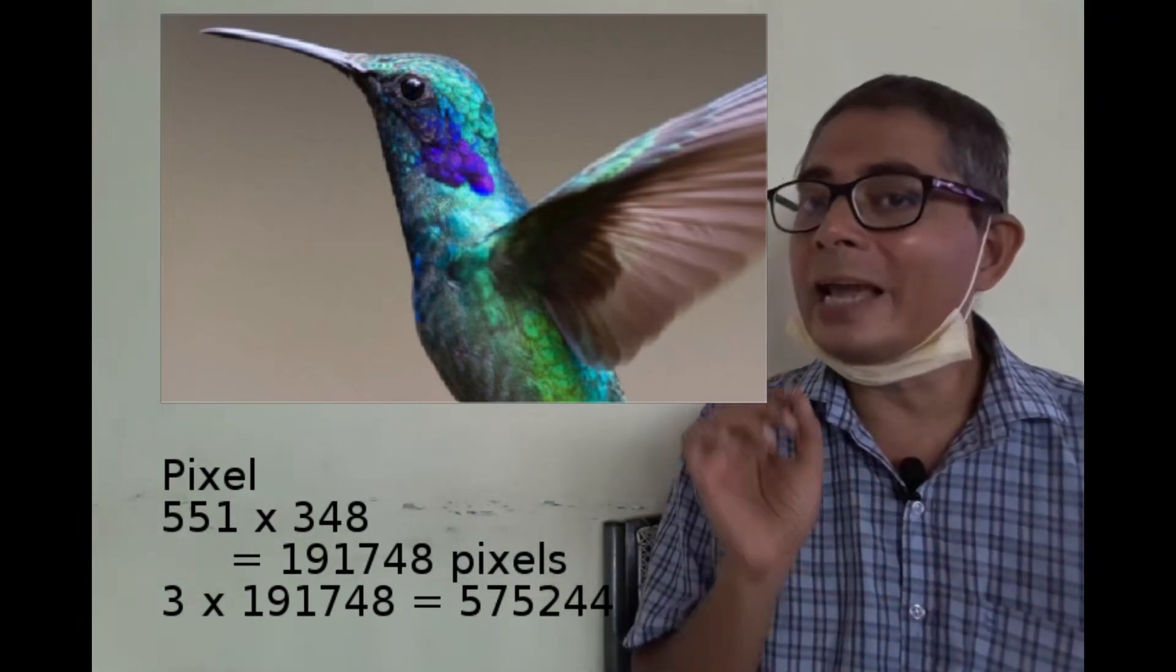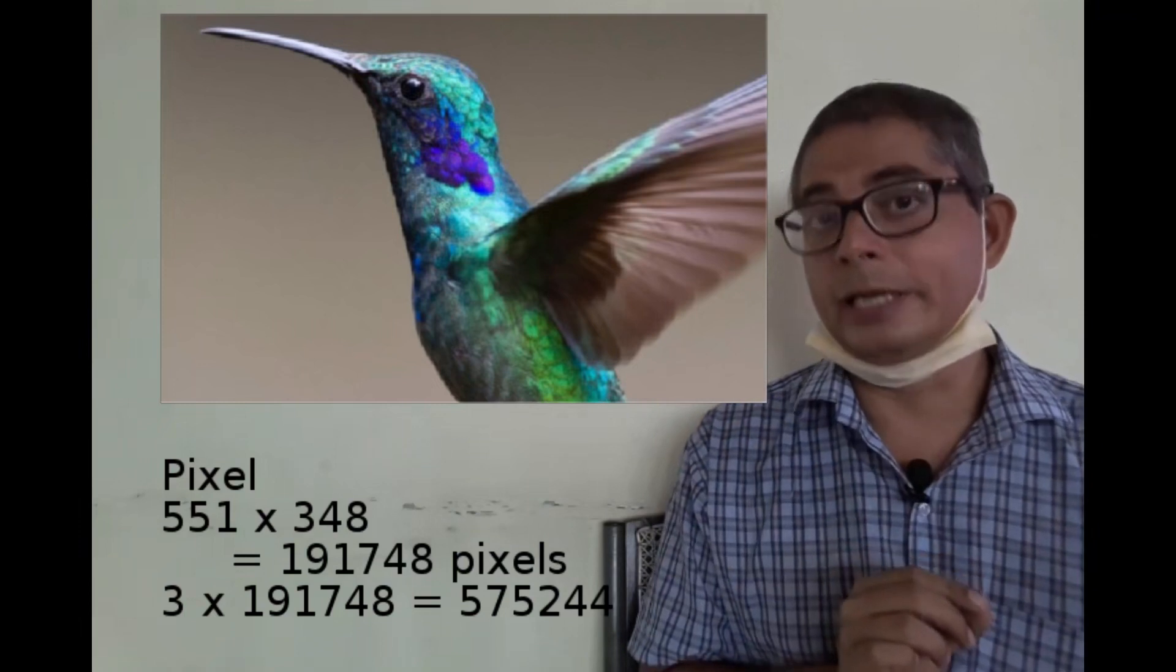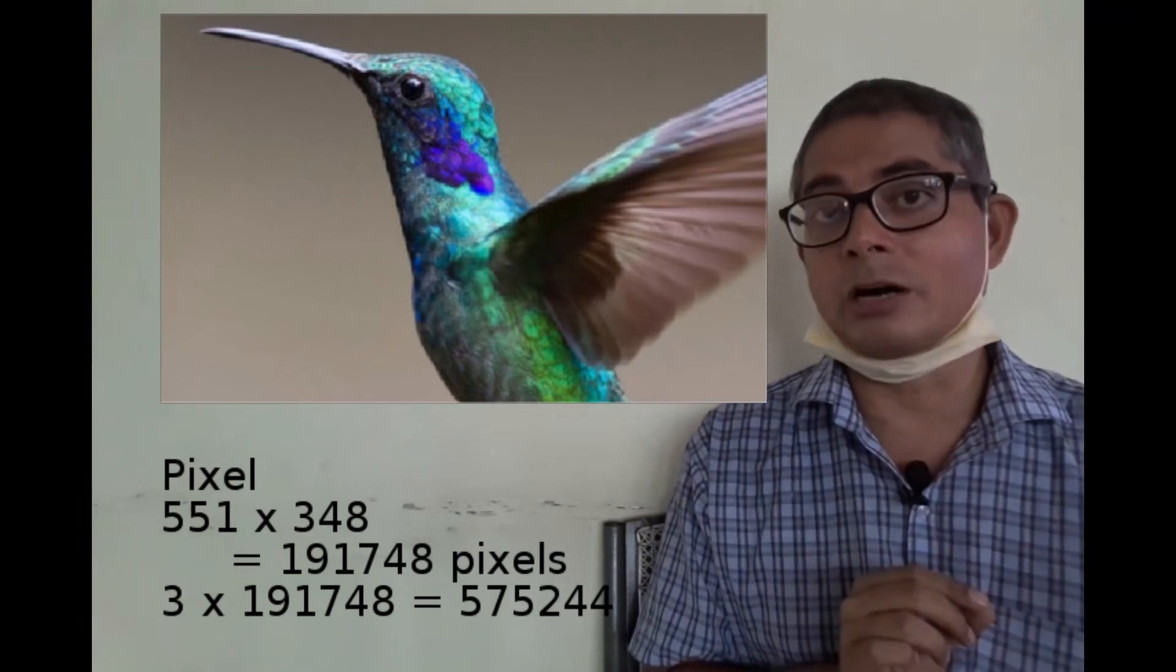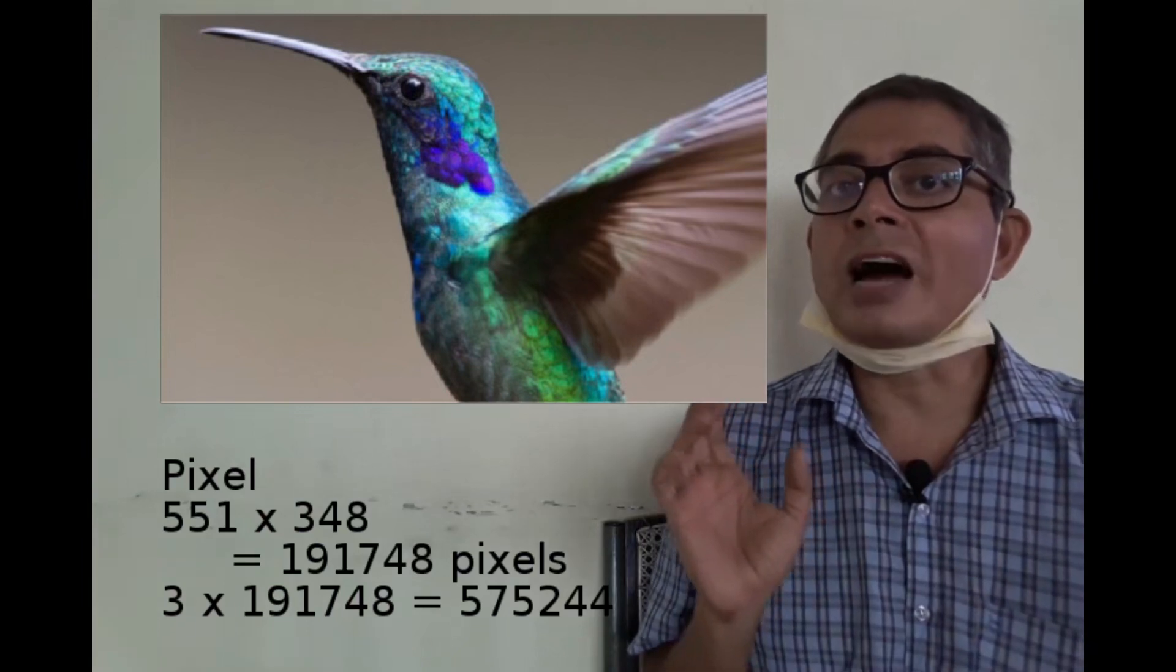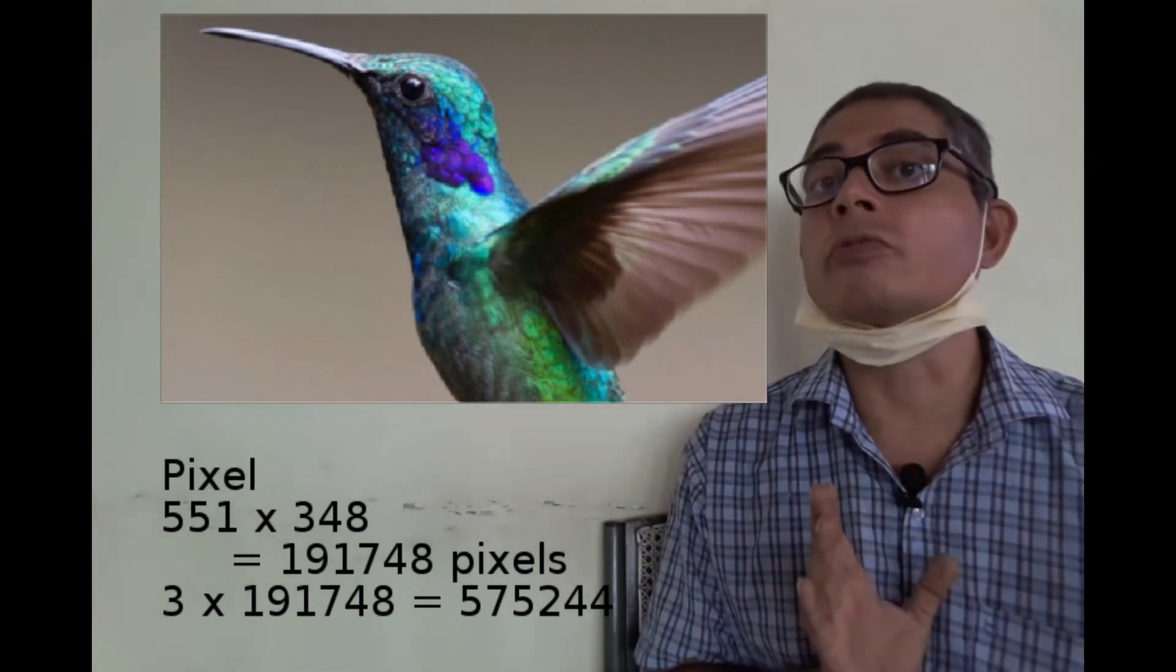If you take 10 snaps, then your data matrix consists of 10 rows and 575,244 columns.